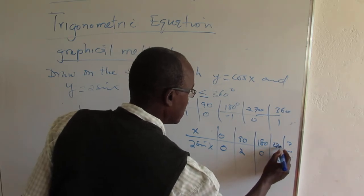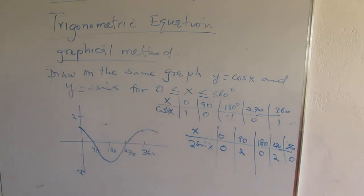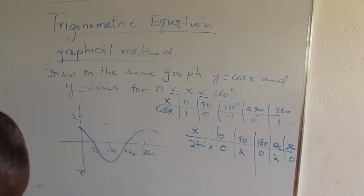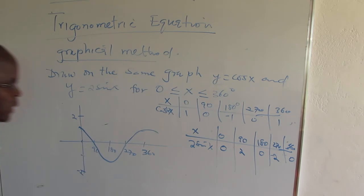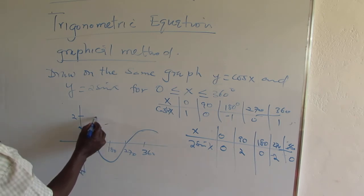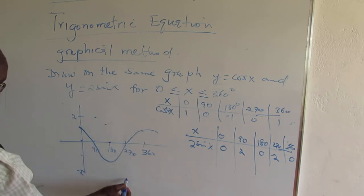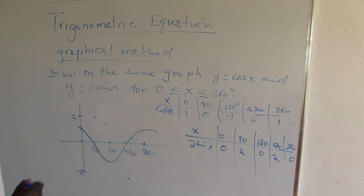When it is 360, it's 0. So we have: at 90 it's 2, at 180 it's 0, at 270 it's minus 2, at 360 it's 0. So we can draw it.